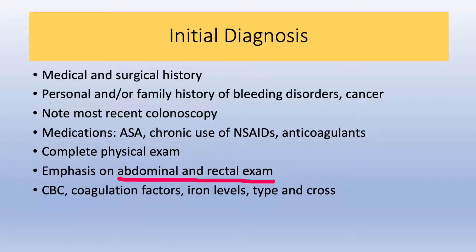The timing, characteristics, and volume of the bleeding should be ascertained. Attention should be paid to personal and/or family histories of bleeding disorders, cancers, or bowel-related diseases. Note the most recent colonoscopy and its findings. The medication list should be interrogated for aspirin, chronic NSAID use, and other anticoagulants.